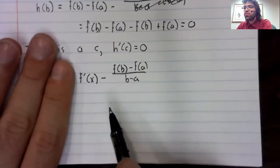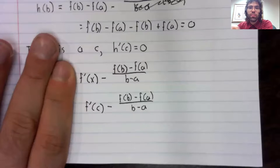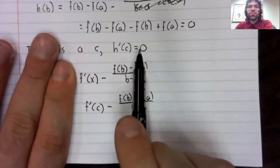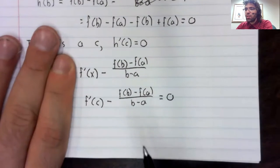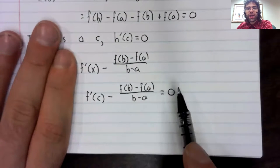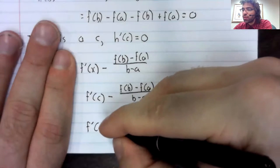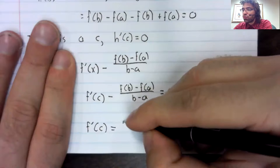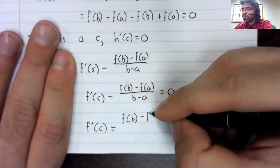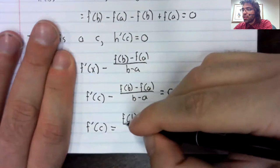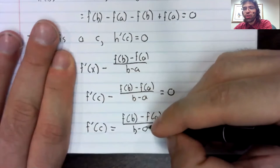And when we plug c in here, we get zero. Take this, add it over to the right, and we get that the derivative at c is the average rate of change.